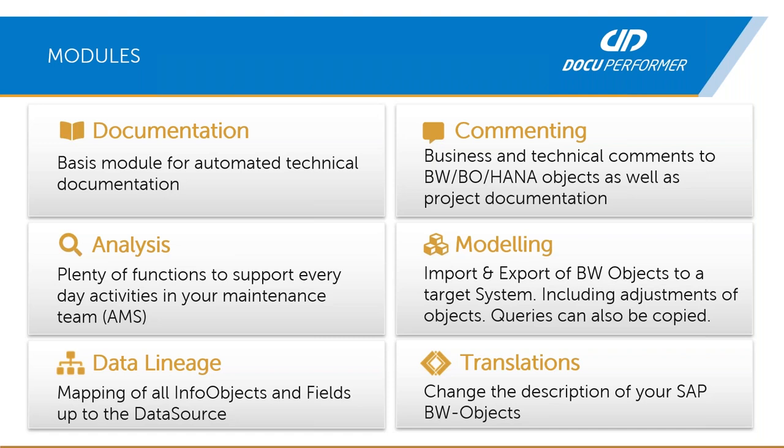For projects related to BW4 migration or preparation for those, we also support what we call modeling — the automatic creation of objects derived from other source systems. For example, you can import a multi-provider, adjust naming conventions, convert DSOs into ADSOs, adjust their naming conventions, and export those elements to a new system. You can also copy queries, saving considerable time with lower testing requirements and automatically creating, for example, 6,000 info objects rather than doing it manually.